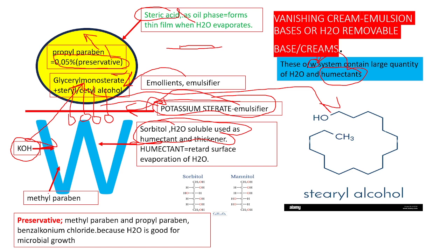Methylparaben is hydrophilic in nature and can be dissolved in a water-based system, whereas propylparaben can be dissolved in an oil-based system. This concludes the topic of vanishing cream.